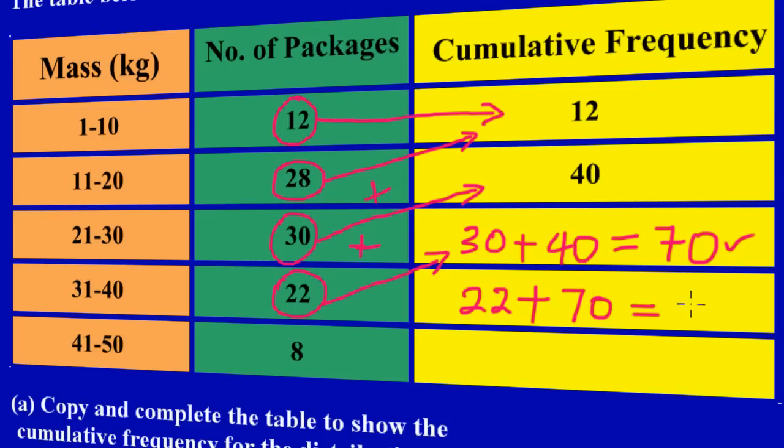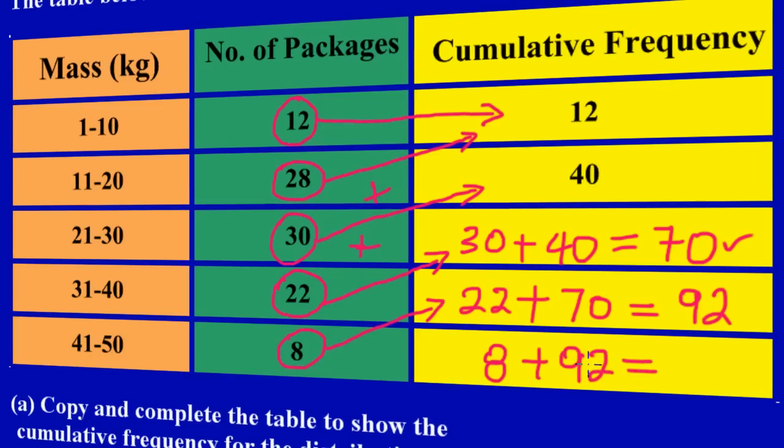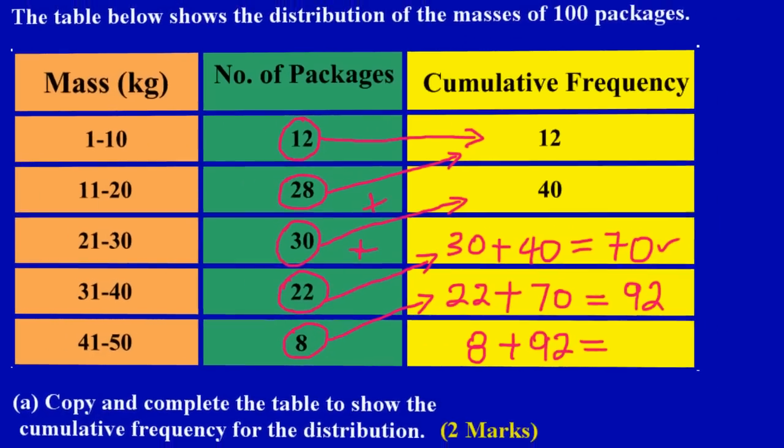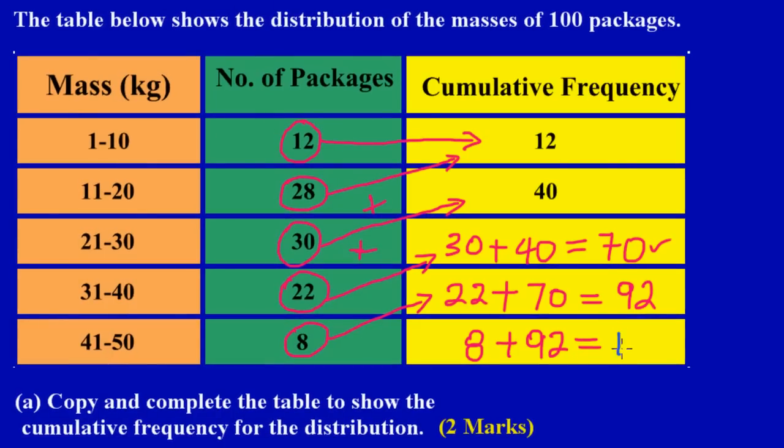And then now I'm going to take my 8 and I'm going to add it to my 92. So I'm going to say 8 plus 92 and that would be equal to 100. So it's that easy guys, that's how we fill out a cumulative frequency column.